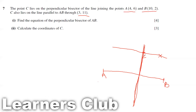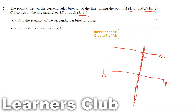To find the equation of the perpendicular bisector, the first thing we have to do is find the midpoint of A and B. Then we need to find the gradient of AB. After that, find the normal, that is the gradient of the normal to this line AB.